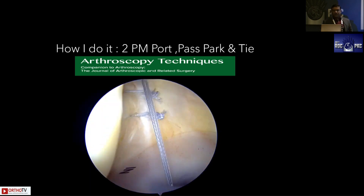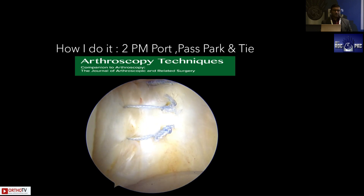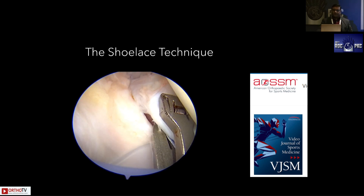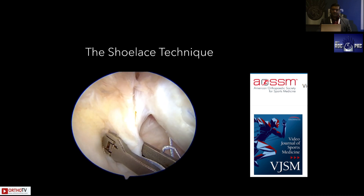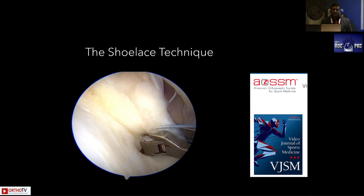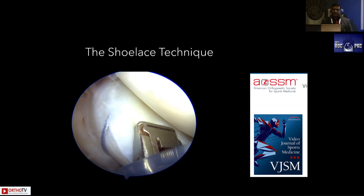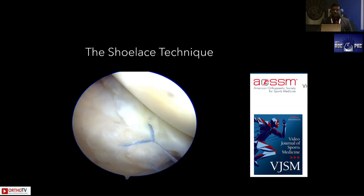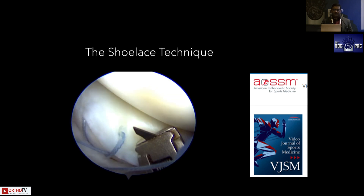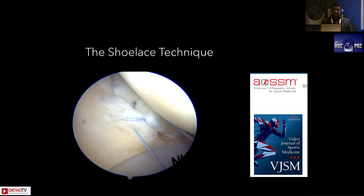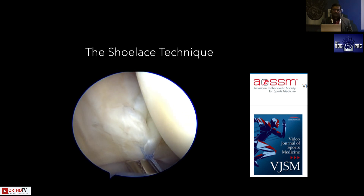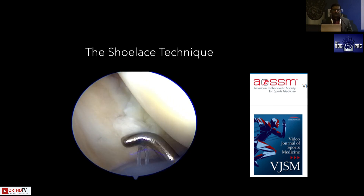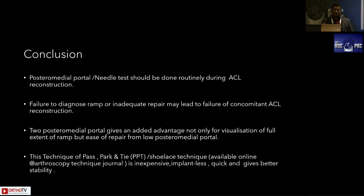We realized that in skin suturing, continuous suturing gives a watertight closure with better healing. So we modified the technique and published a shoelace technique in AJSM. Using a single fiber wire, you do the entire ramp repair: the first suture through the meniscus passes to the capsular side, then from capsule to meniscal side, alternating back and forth. Sutures can be parked in the anterolateral portal to avoid entanglement. Once pulled, it looks like a shoelace — a simple technique using a single fiber wire without any implant, particularly effective for large ramp tears.